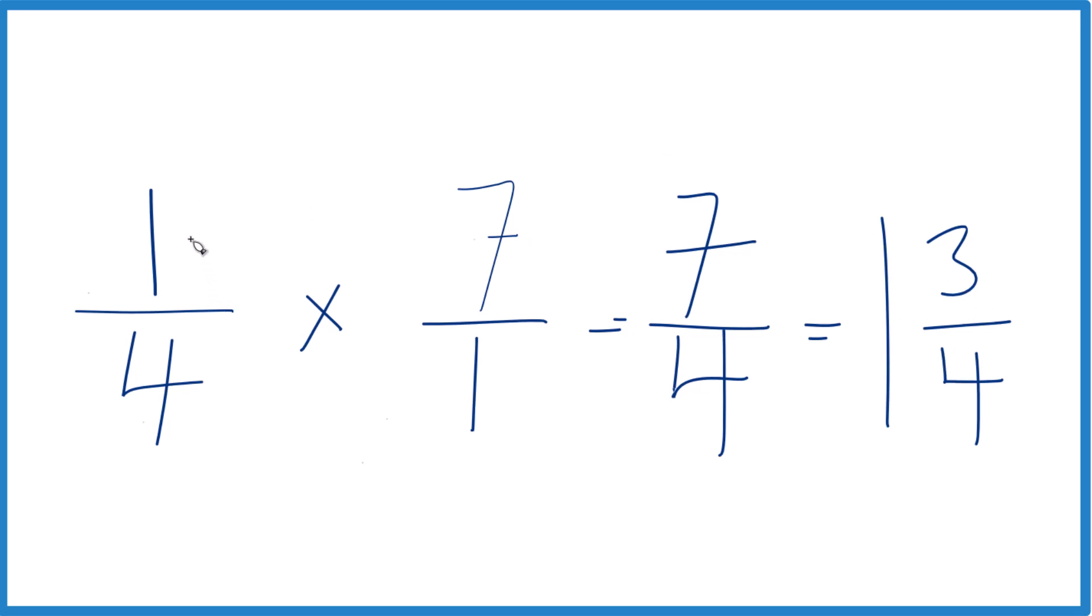So in answer to our question, one-fourth of 7, or one-fourth times 7, equals 1 and 3-fourths. As a decimal, you could call this 1.75.